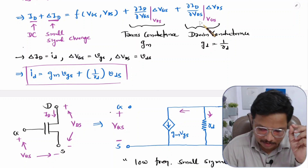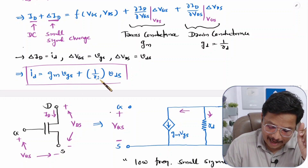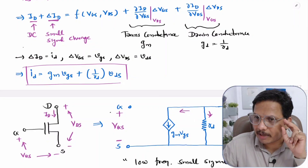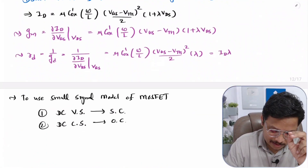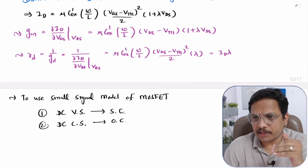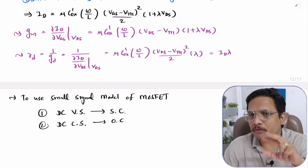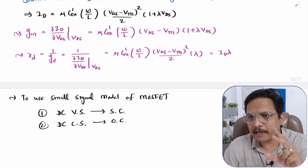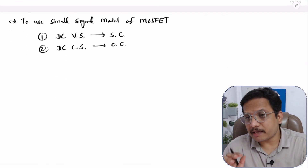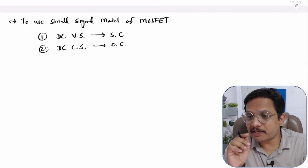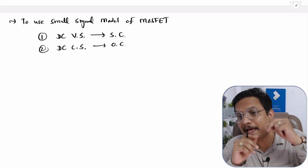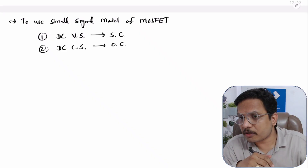Here I will derive GM and RD for the linear region. In my last video I derived GM and RD for the saturation region. Now I will derive them for the linear region. First, you should know the basic drain current equation for the linear region, which I have already explained in earlier MOSFET videos.